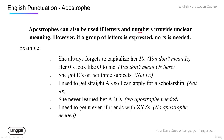A less common use of apostrophes is when letters or numbers are used as individual characters and might be unclear. In that case, we use an apostrophe-s to help tell the reader that we're using this letter or number as an individual character.